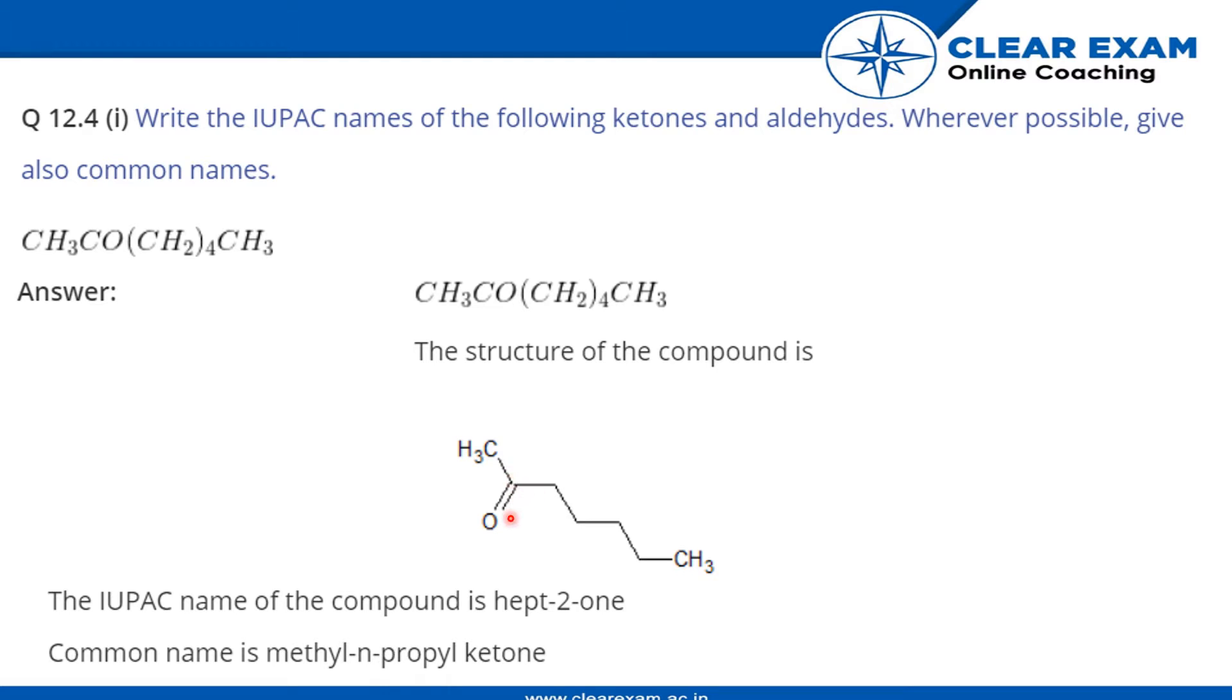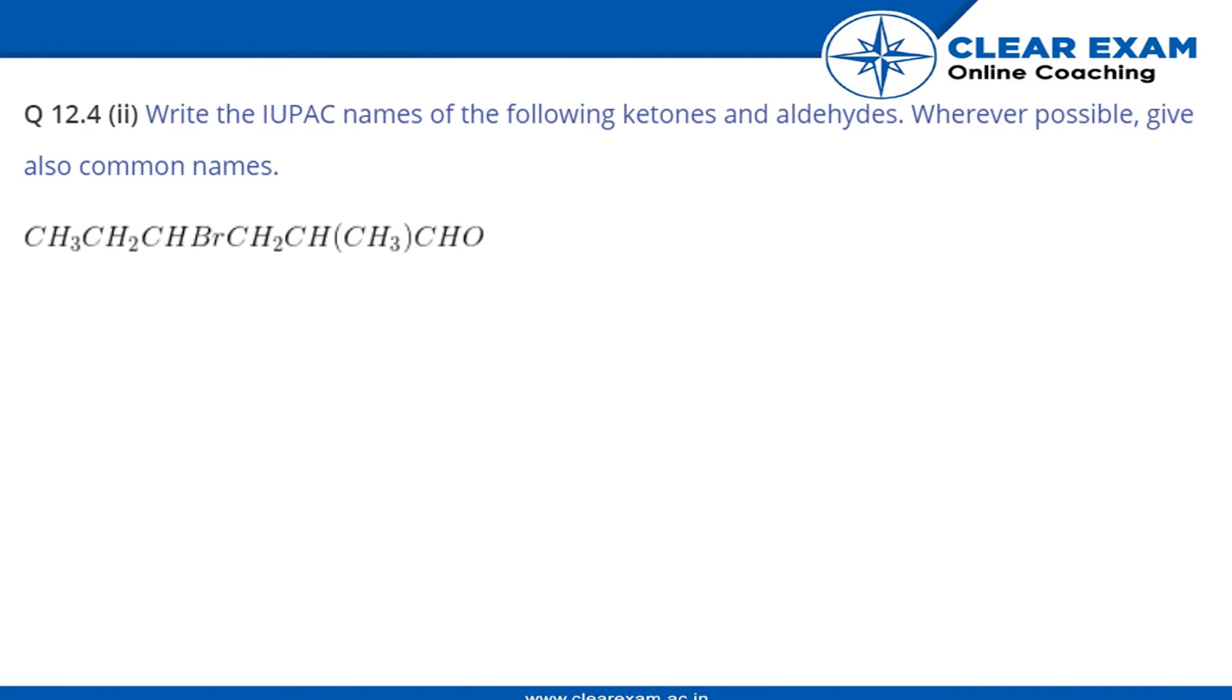And the common name is methyl n-propyl ketone. Second is this, so we'll draw the structure. We know we have an aldehyde group because of CHO. We have Br as a substituent and CH3 as a substituent. So the structure of the compound is shown below.